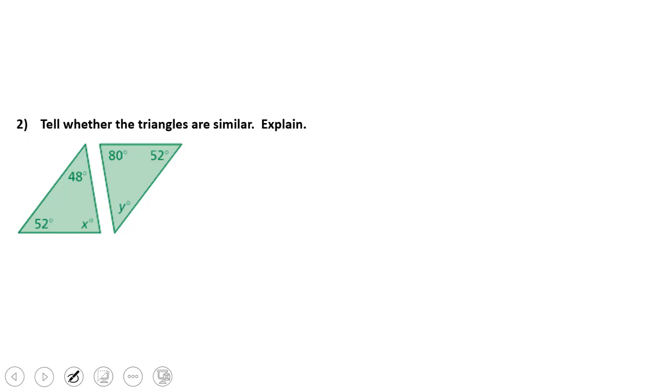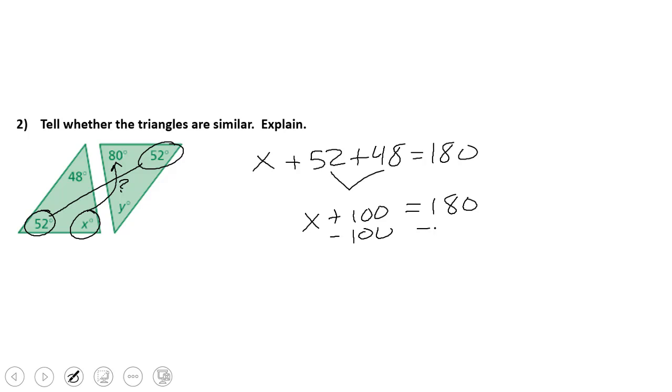Number two, telling whether the triangles are similar. Again, we're going to explain, and of course, we recognize that we have angle 52 is equal to angle 52. So I'm going to ask myself, is angle X equal to 80 degrees? If it is, I have two similar triangles. So X plus 52 plus 48, that's equal to 180. Simplify, X plus 100 equals 180. So subtracting the 100, I have X equals 80 degrees.